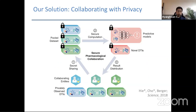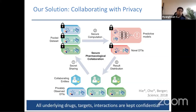In this work we propose using MPC to tackle this problem, allowing multiple collaborating entities with their own privately observed DTIs to pool their data securely and run an MPC protocol together to train predictive machine learning models and obtain predictions from them. The trained models and predicted interactions are distributed back to the collaborating entities as a reward for participation. The MPC setup is the same as what we used for GWAS, but here we're running a gradient descent training process for ML models instead of computing a statistical quantity. Since we're secret sharing the entire data, we're hiding not just interaction patterns but also the identities of the drug compounds and protein targets.